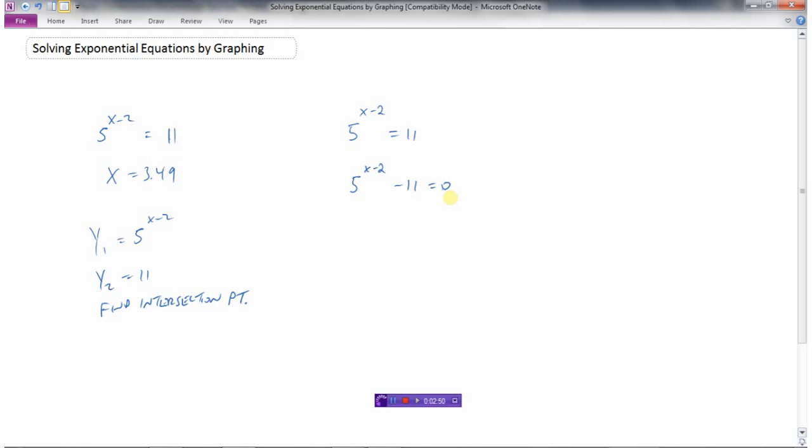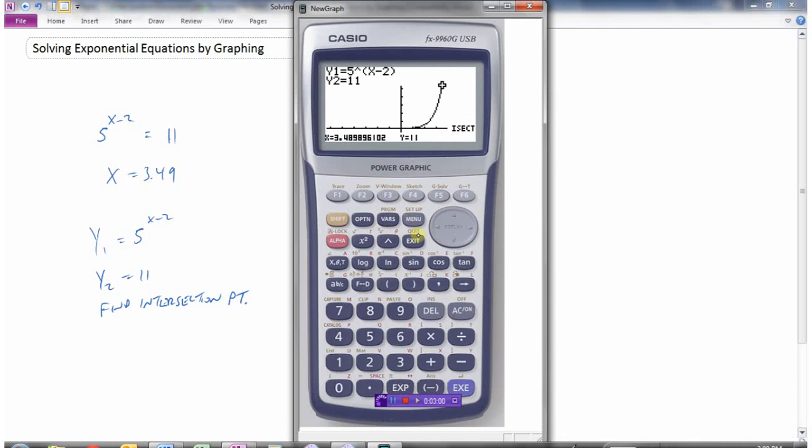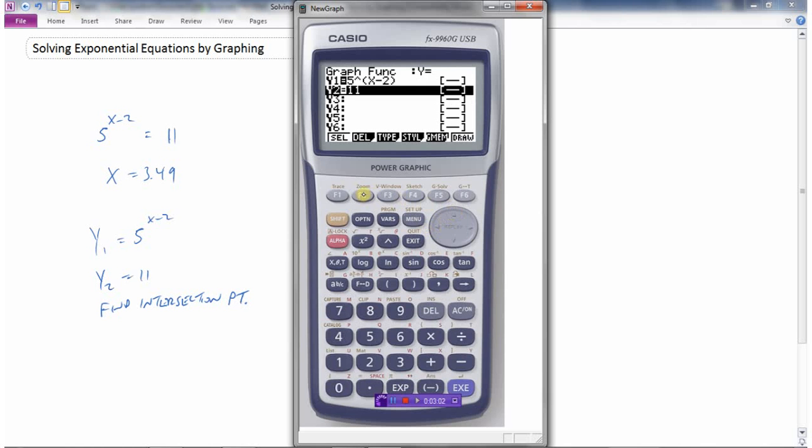So if I minus 11 from both sides and set my equation equal to zero, now I only have one equation: 5 to the power of x minus 2, then minus 11. So let's look at this one—5 to the power of x minus 2, and then minus 11.